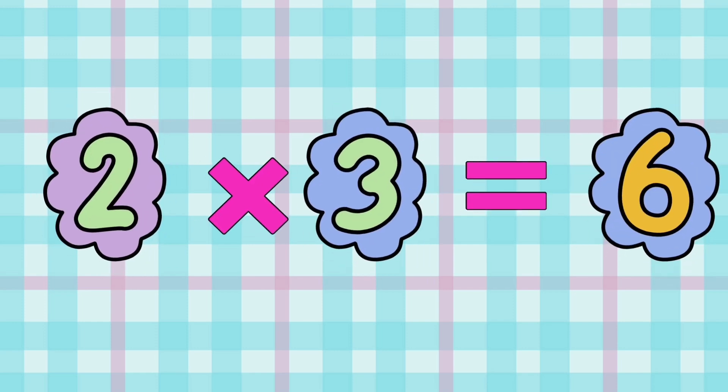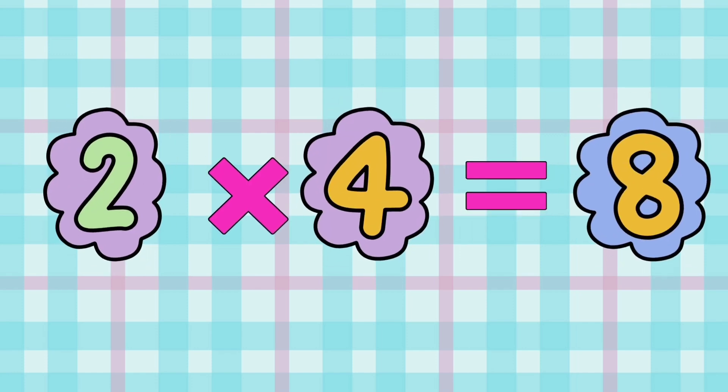2 x 3 is equal to 6. 2 3s are 6. 2 x 4 is equal to 8. 2 4s are 8.